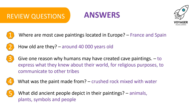Welcome back. Here are the answers to our review questions. 1: Where are most cave paintings located in Europe? They're located in France and Spain. 2: How old are they? Around 40,000 years old. 3: Give one reason why humans may have created cave paintings. To express what they knew about their world, for religious purposes, or to communicate to other tribes. 4: What was the paint made from? Crushed rock mixed with water. 5: What did ancient people depict in their paintings? Animals, plants, symbols and people.